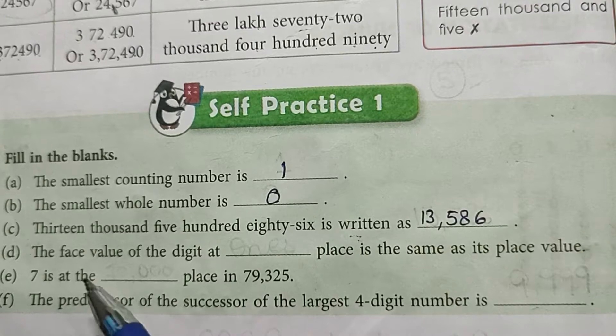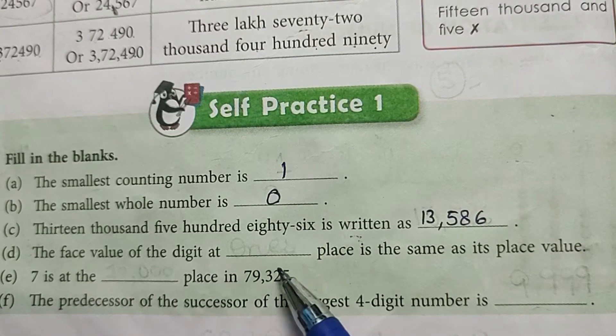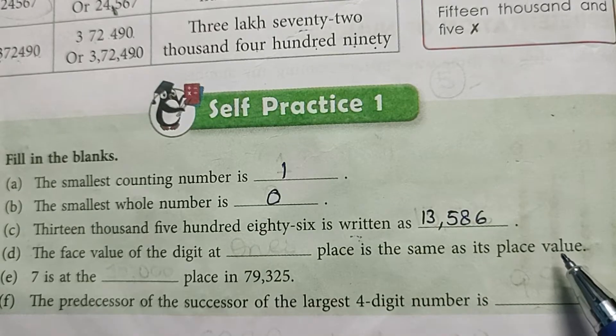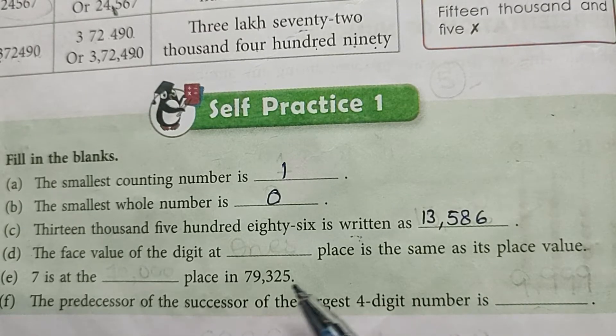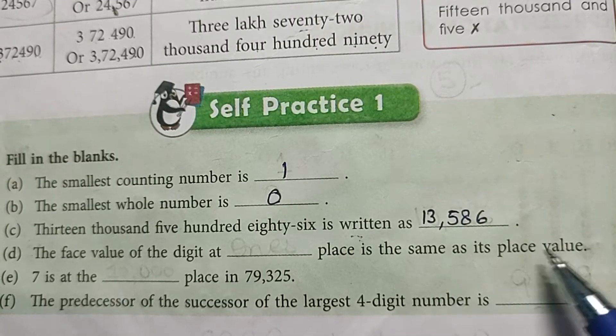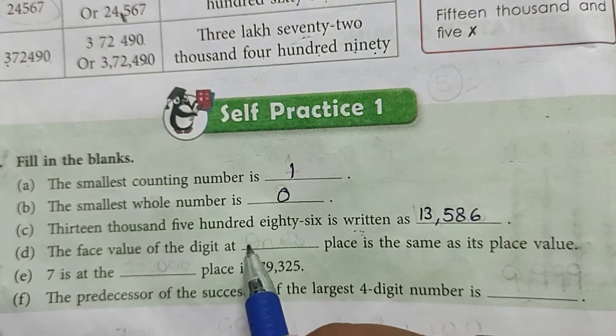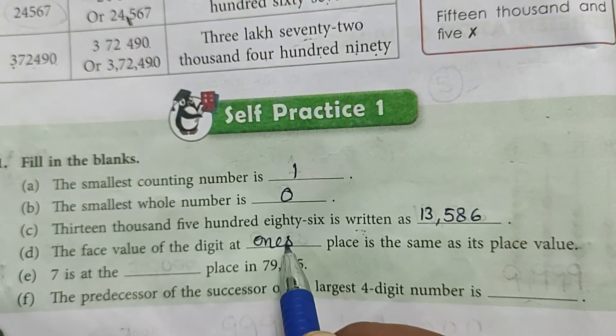The question is asking at which place is the face value of a digit the same as its place value. So when a number is at the ones place, then its face value and place value are the same.